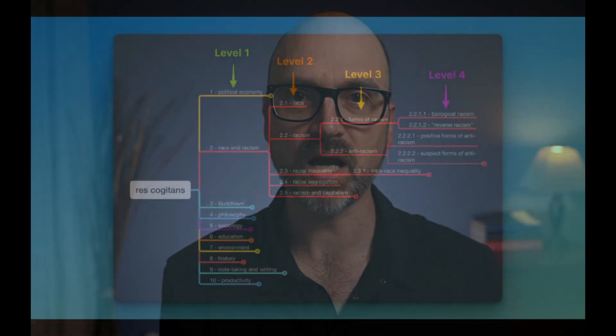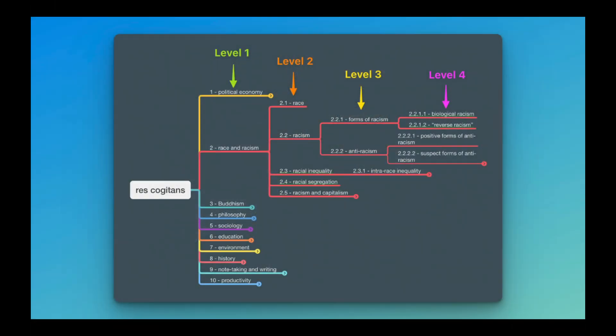In this mind map replica of my own Zettelkasten, you can see that I have built out one of my subject areas three levels deep — three levels beyond level one. You can think of each of these levels as a column. The column furthest to the left is level one, the column to the right of that is level two, and so on.